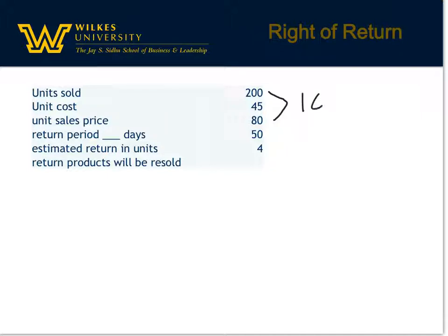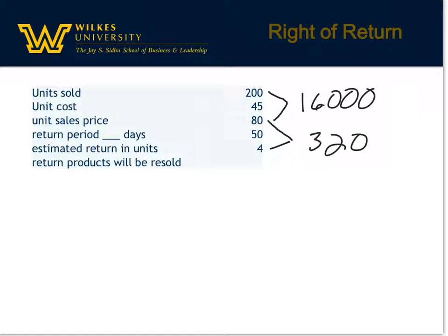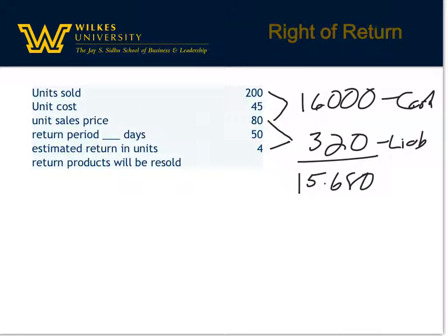That means there's $16,000 in cash received or receivables. We also know that they expect four units will be returned and that they have to pay the customers back at $80 a piece — so that is $320 expected to be delivered back to the customer. We need to show that we're going to receive cash of $16,000 and estimate a liability for the $320. The difference, $15,680, is what's going to be recorded as revenue at the time of the sale.